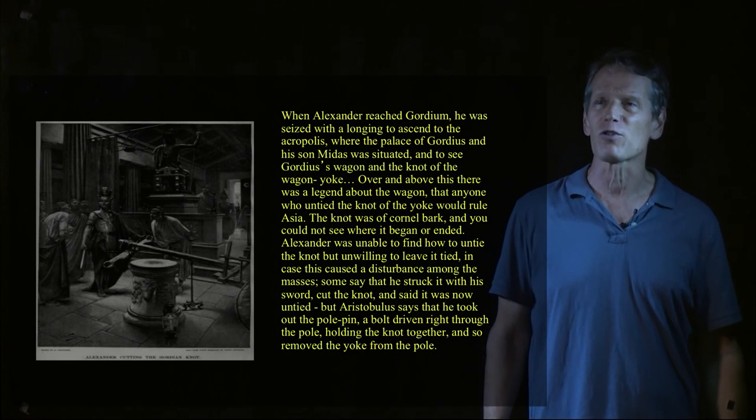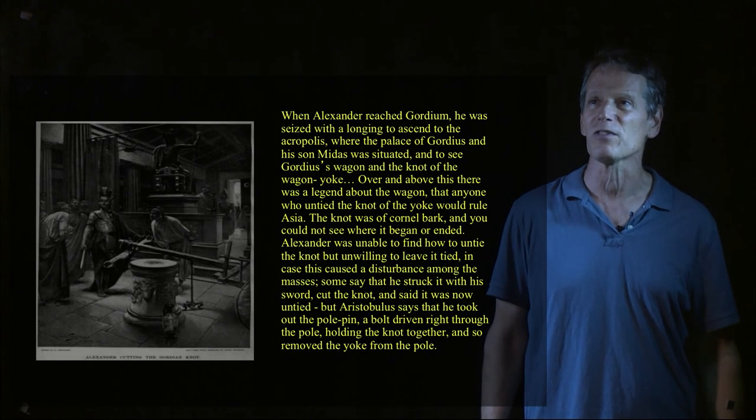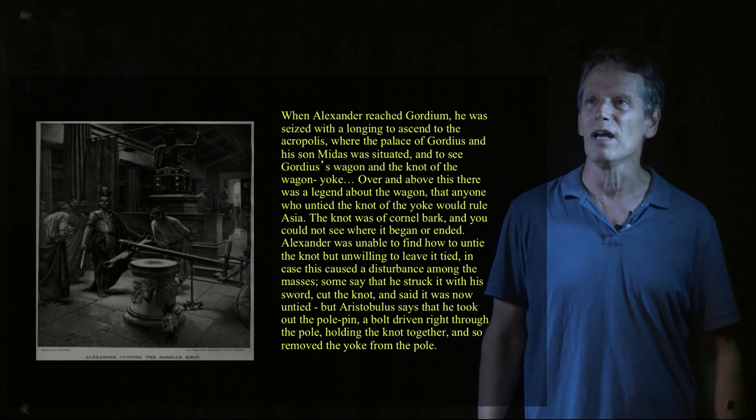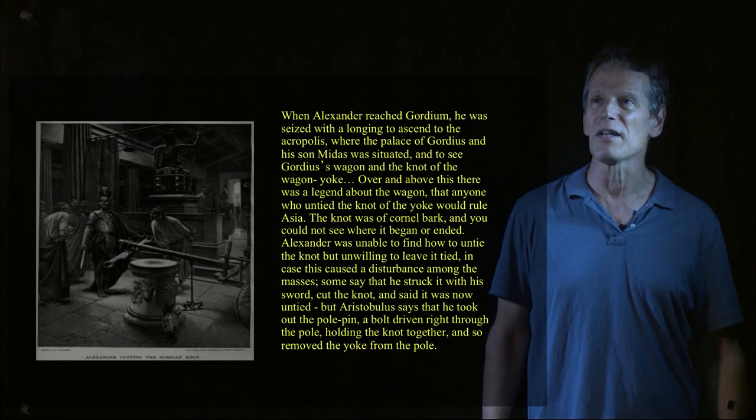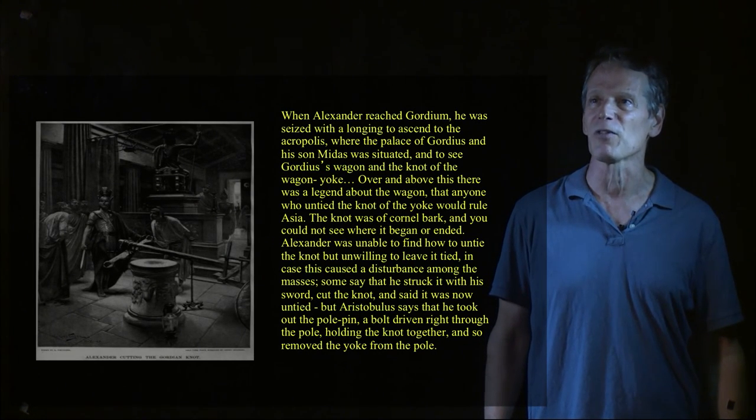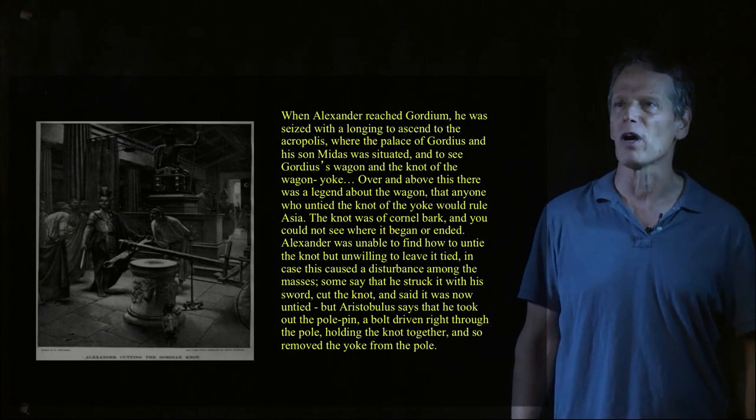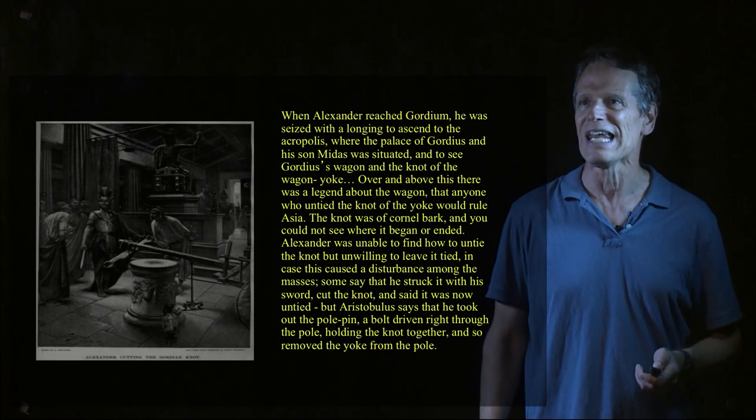When Alexander reached Gordium, he was seized with a longing to ascend to the Acropolis, where the palace of Gordius and his son Midas was situated, and to see Gordius' wagon and the knot of the wagon yoke. Over and above this, there was a legend about the wagon, that anyone who untied the knot of the yoke would rule Asia. The knot was of cornel bark, and you could not see where it began or ended.